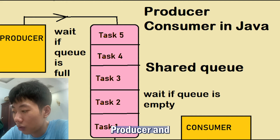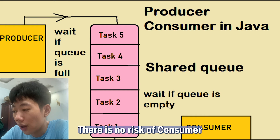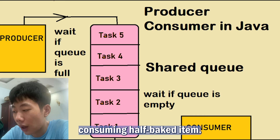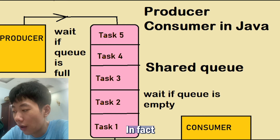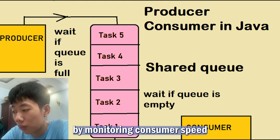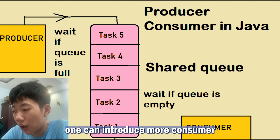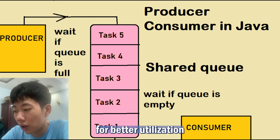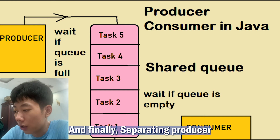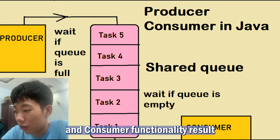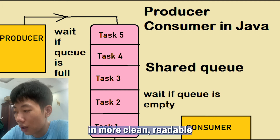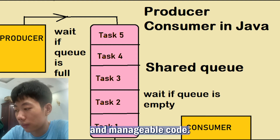Producer and consumer can also work at different speeds. There is no risk of a consumer consuming a half-packed item. In fact, by monitoring consumer speed, one can introduce more consumers for better utilization. Finally, separating producer and consumer functionality results in more clean, readable, and manageable code.